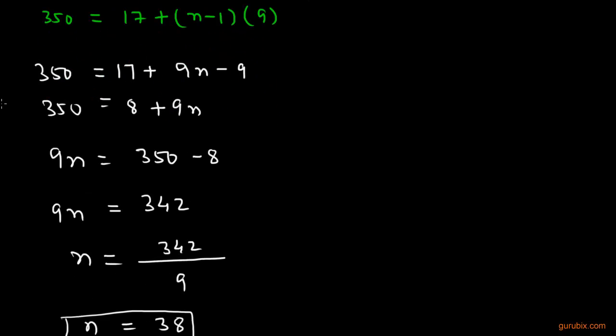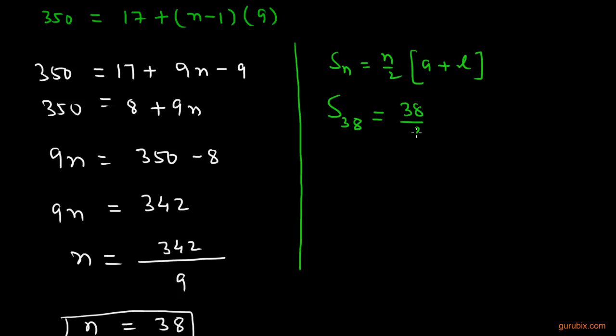Now we shall find the sum of first 38 terms by using the formula Sn = n/2 [sum of first and last terms]. Therefore, S38 = 38/2 × (17 + 350), where the first term is given as 17 and the last term is given as 350.